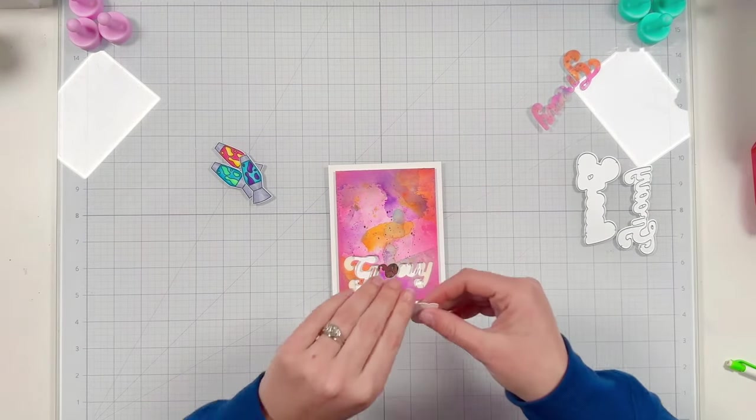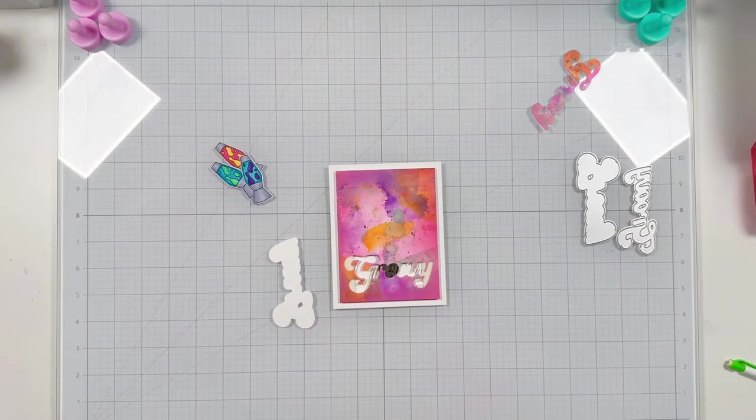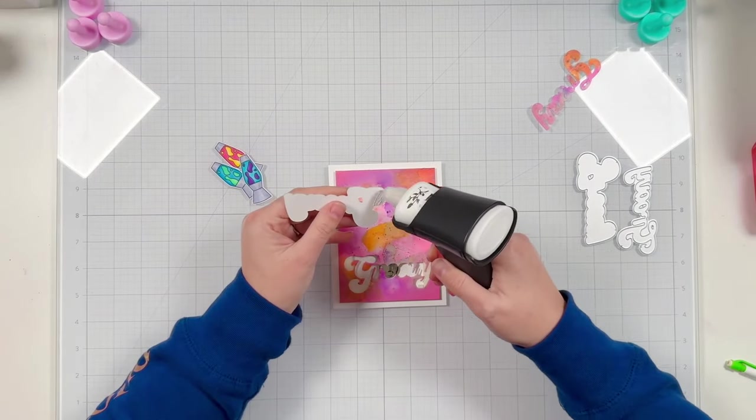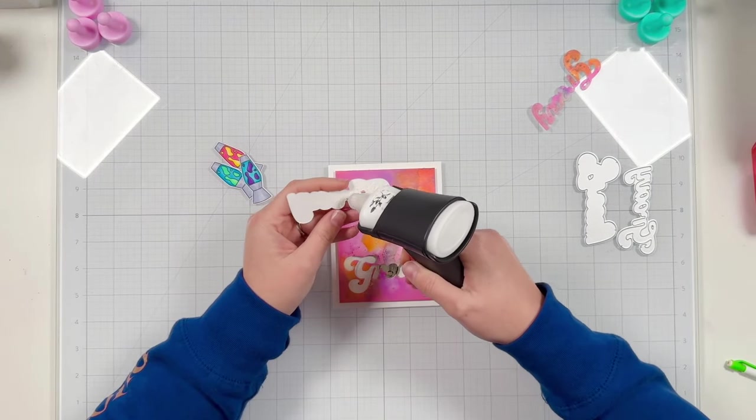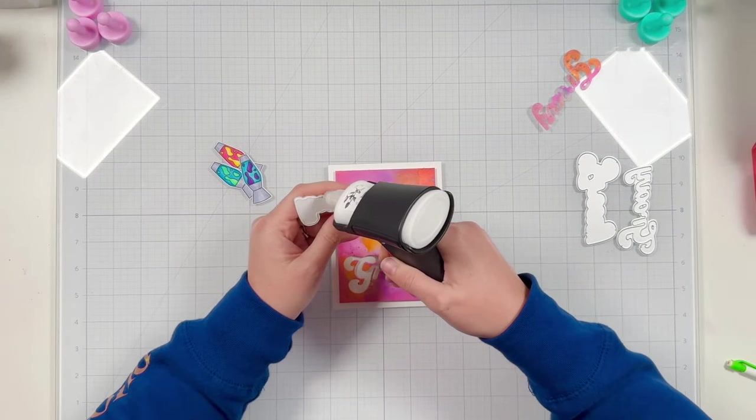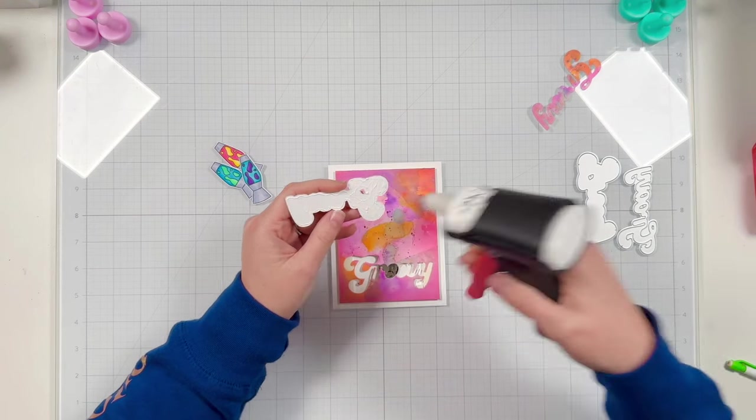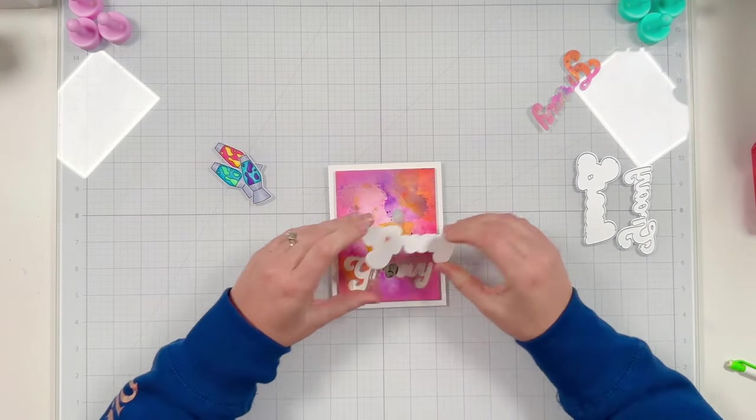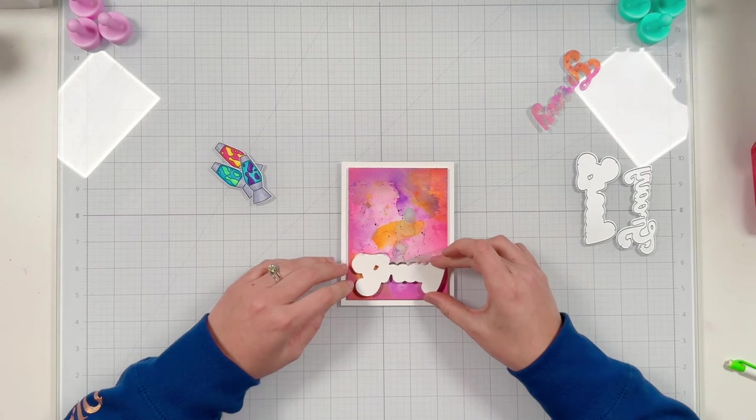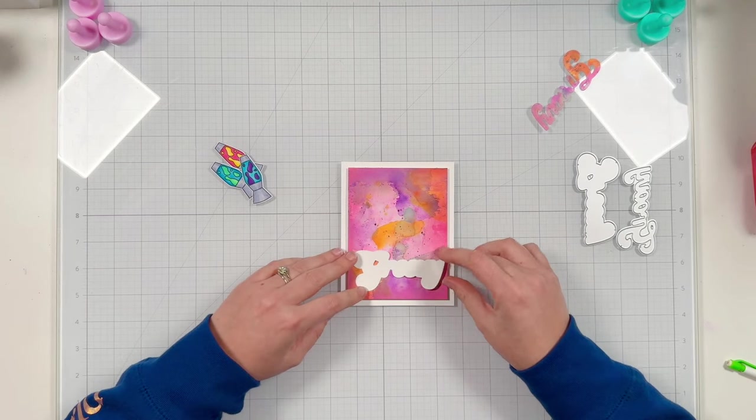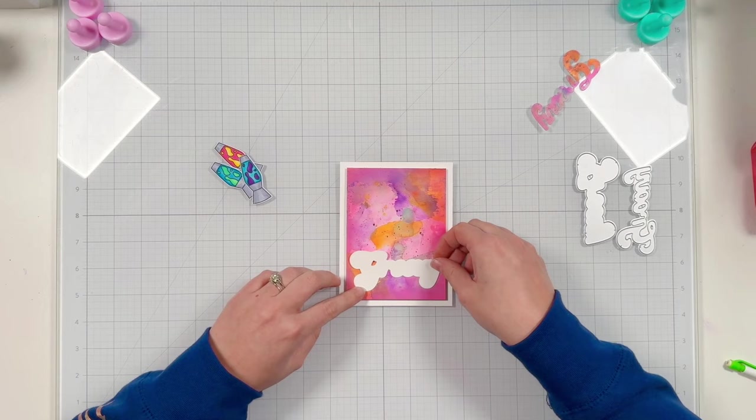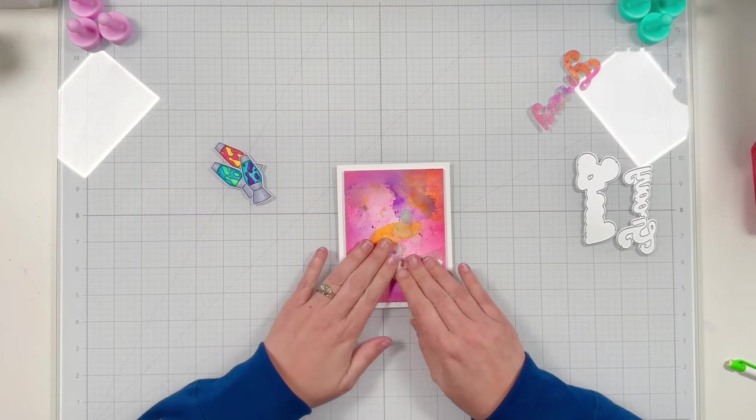Now that the guts of our card are all put together let's work on assembling the rest. I'm going to first add some liquid adhesive to my white shadow. I'm going to go ahead and make sure I cover that hole that I die cut from the word groovy with this white shadow die piece.